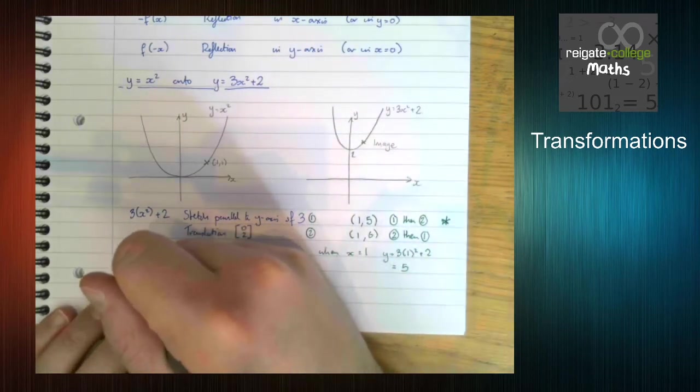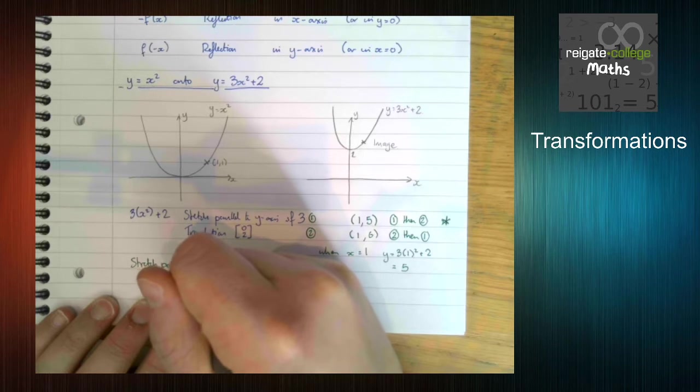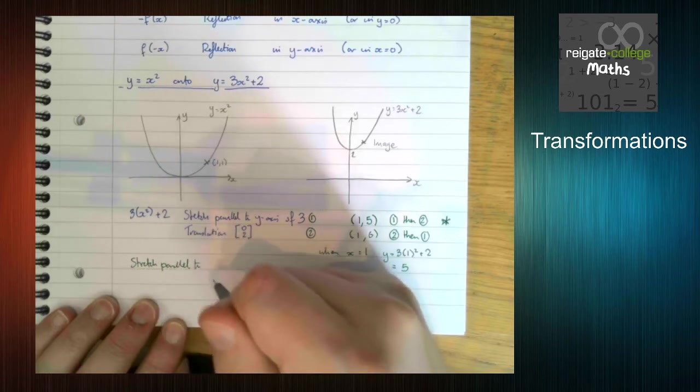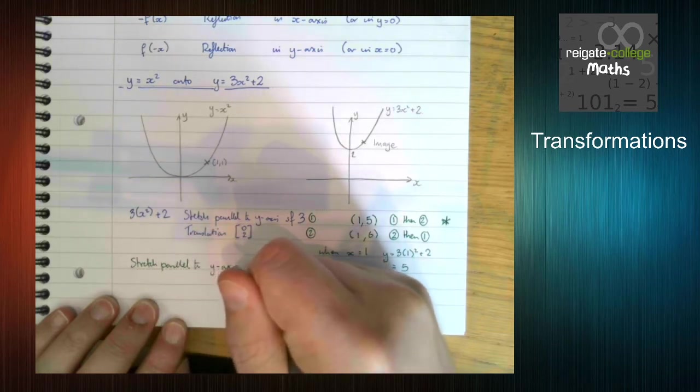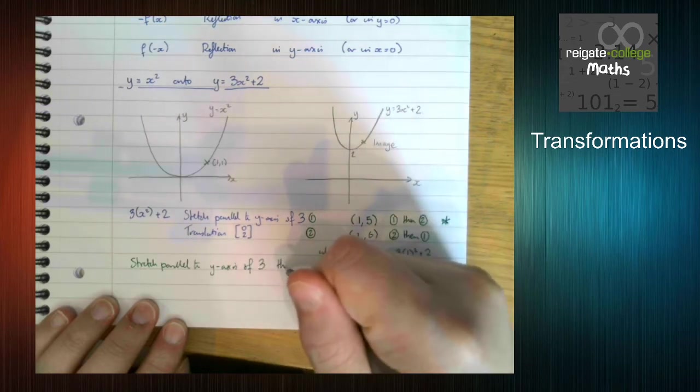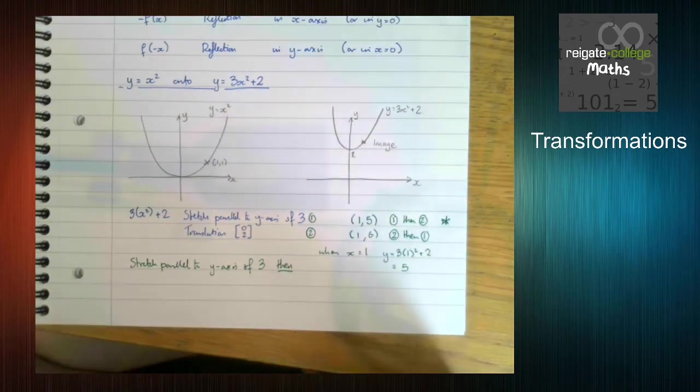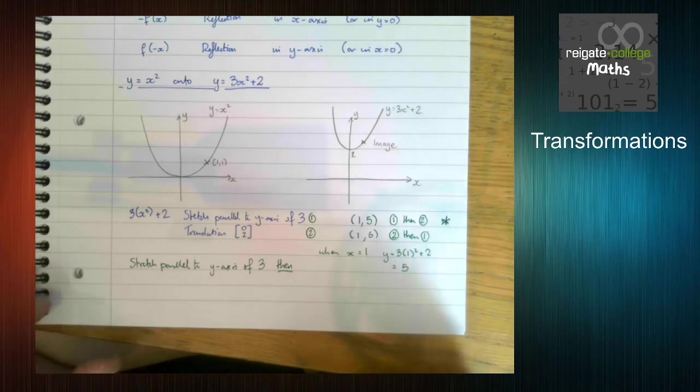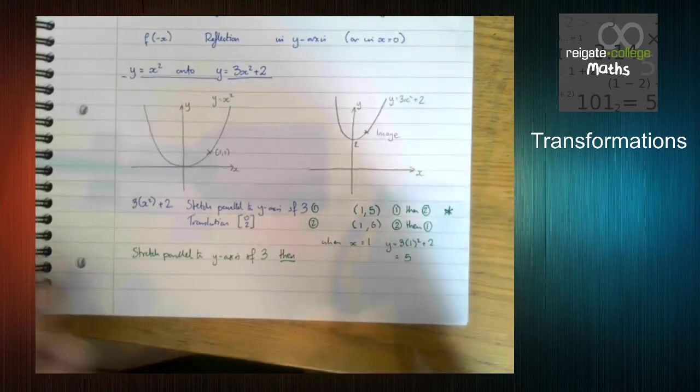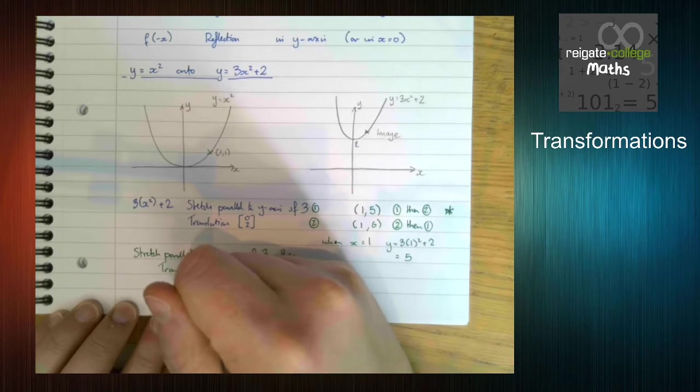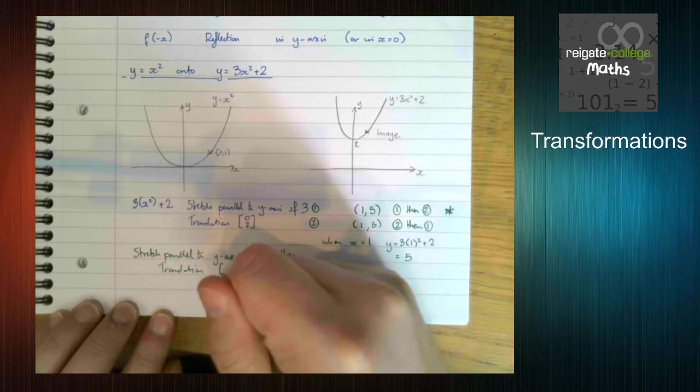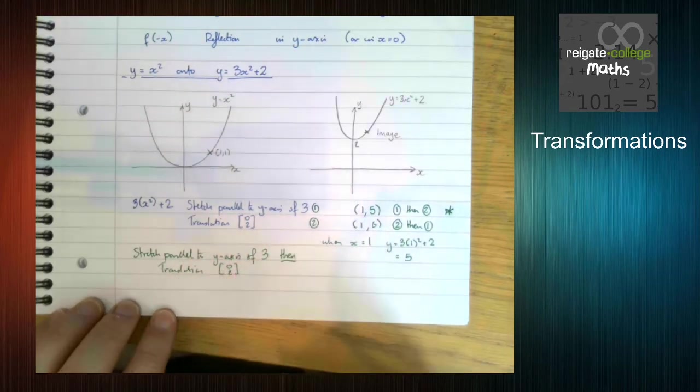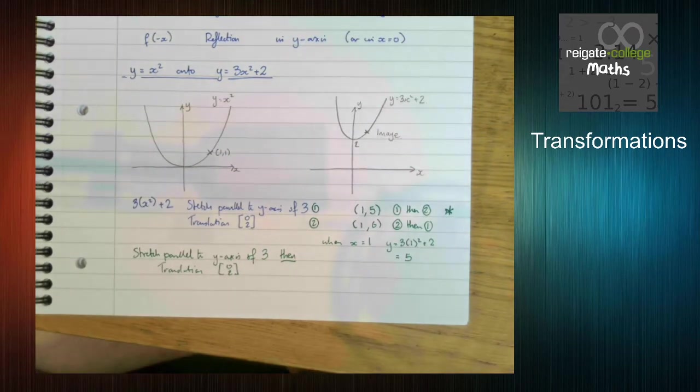So describing the combinations of transformations, we would say it is a stretch parallel to the y axis scale factor 3. Then, and it's very important you refer to then, you don't need to underline it because that implies the order, then a translation 0, 2. So if you have a translation and something else both in the y direction, you do the translation second.